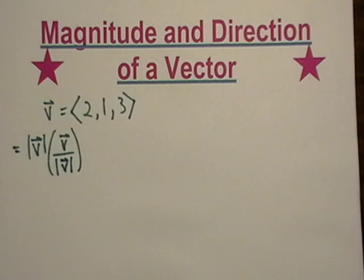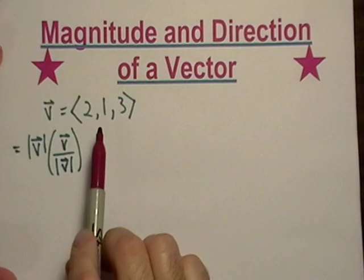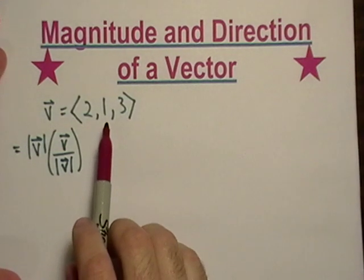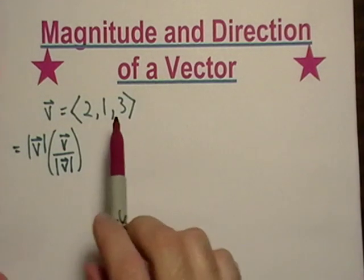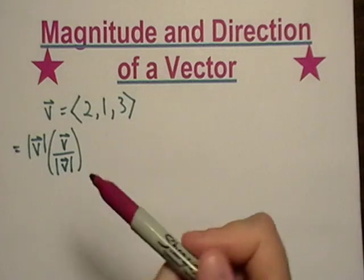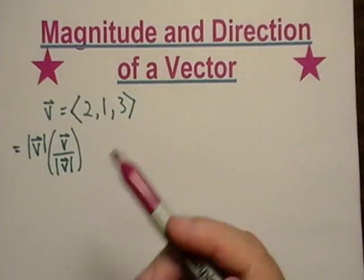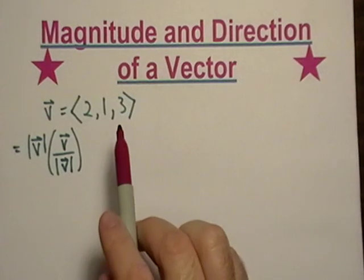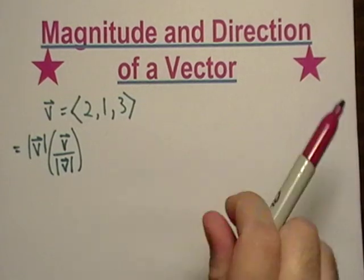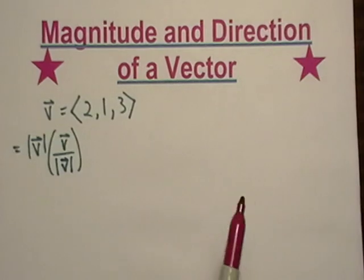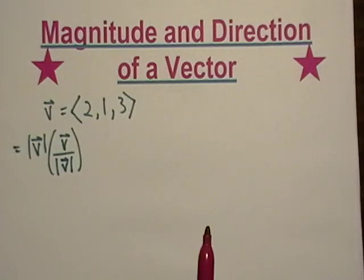Let's talk about the magnitude and direction of a vector. It's important to be able to do this because if we look at this vector right here — 2, 1, 3 — we can't really tell much about it. I can't just look at it and say it's going in this direction.